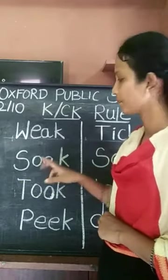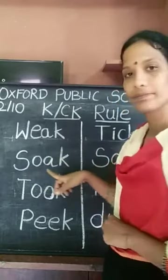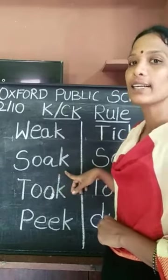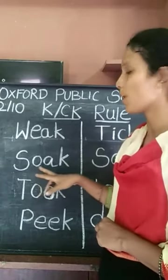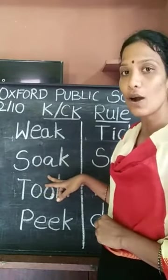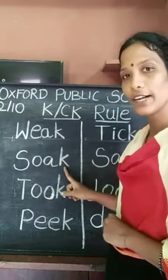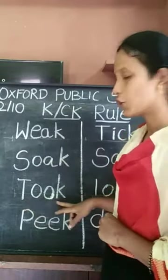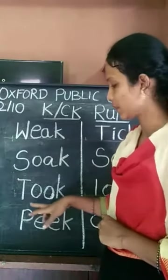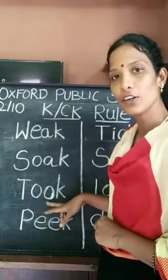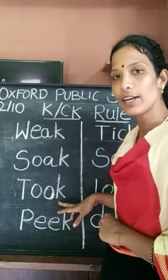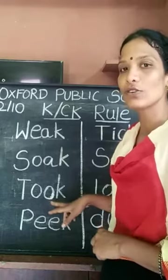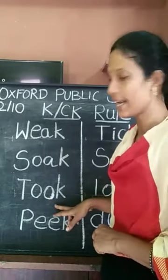When the word comes with two vowels and ends with K sound, write only K. 'Took' — took comes with two vowels and ends with K sound, so write only K at the end.